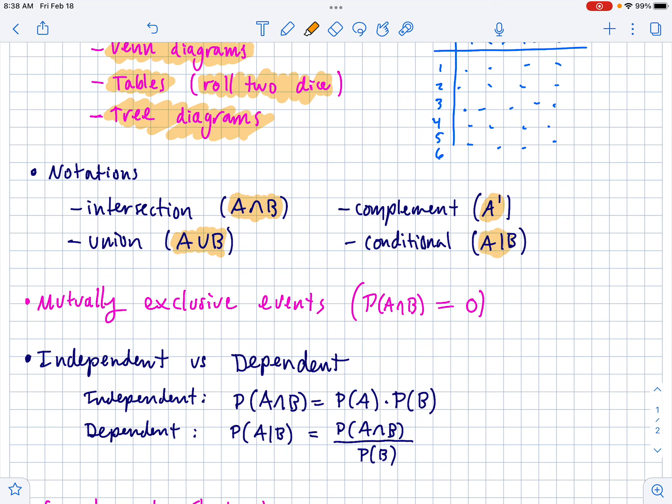A complement is everything that's not A. And then the conditional probability is A given B. So that's the probability of A given that B has already happened.